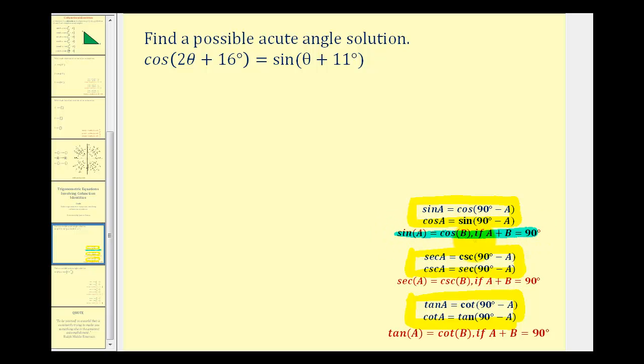So this is true if A plus B equals 90 degrees. It's also true that secant A equals cosecant B if A and B are complementary or have a sum of 90 degrees. And tangent A equals cotangent B again if A plus B equals 90 degrees.